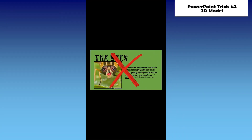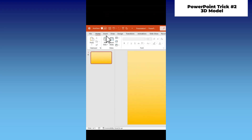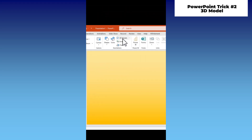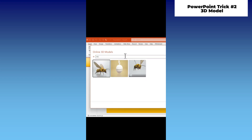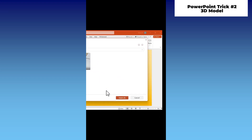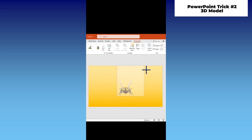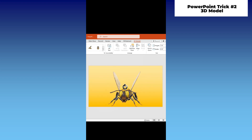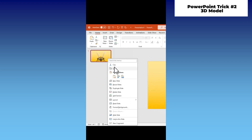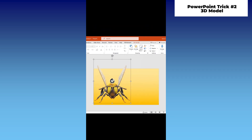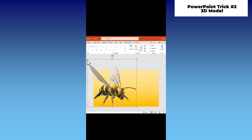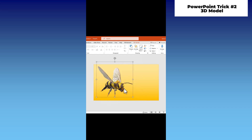Stop doing boring presentations like this. Instead, go to the Insert tab and click on 3D Models. Search for your desired 3D model and insert it onto your blank slide. Next, you can adjust its size and angle. Afterward, duplicate the slide, reposition the 3D model, adjust its size and rotate its angle. This will look very nice later.